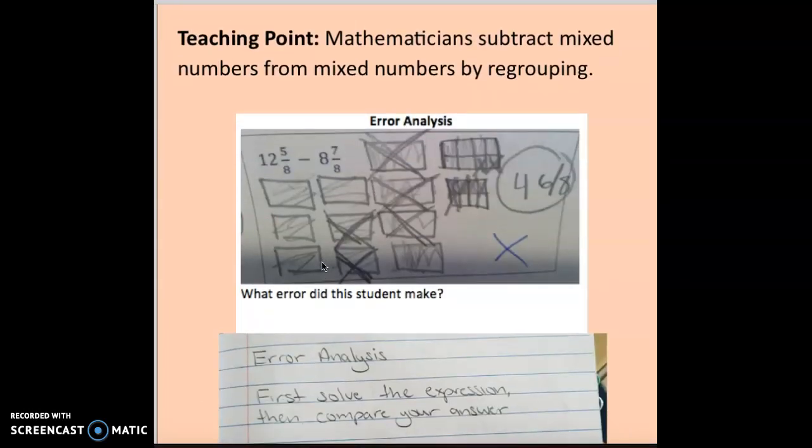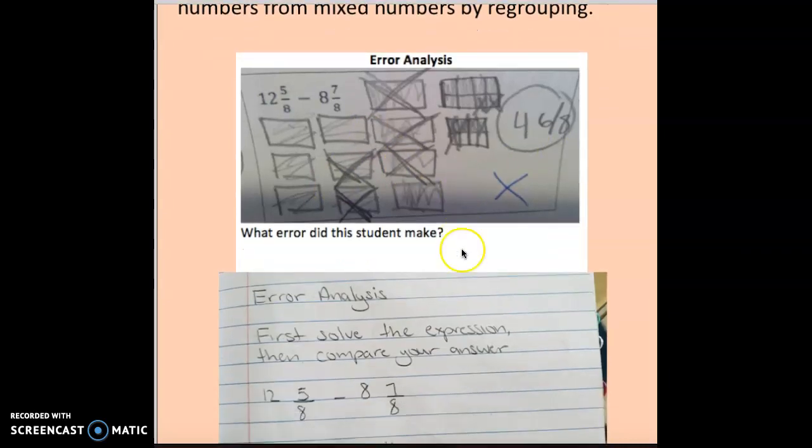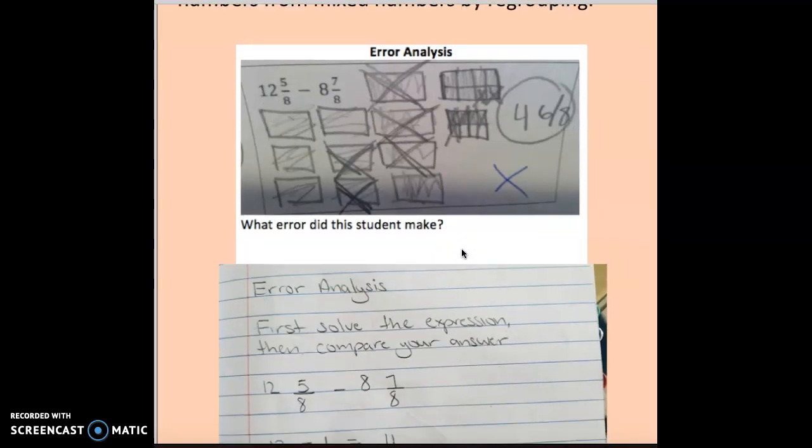Let's look at our error analysis. The purpose of error analysis is to help us see what mistakes other students are making, so we can learn from them and avoid the same mistake. When we look at error analysis, first we want to solve the expression, then compare our answers. We have the expression 12 and 5 eighths minus 8 and 7 eighths, and the student got 4 and 6 eighths. Obviously, since it's an error analysis, the student did this incorrectly, so let's solve it ourselves.